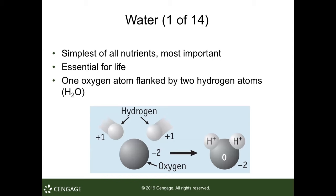Water is the simplest of all nutrients and the most important — it's essential for life on this planet. The way it's set up makes water so important, and if something about the planet were different — gravity, distance from the sun, temperature — water as we know it might not be the same. Water is one oxygen with two hydrogen atoms, one on either side: H₂O.